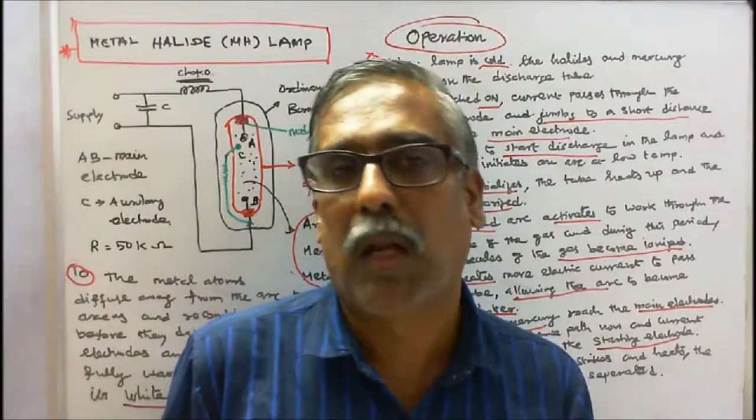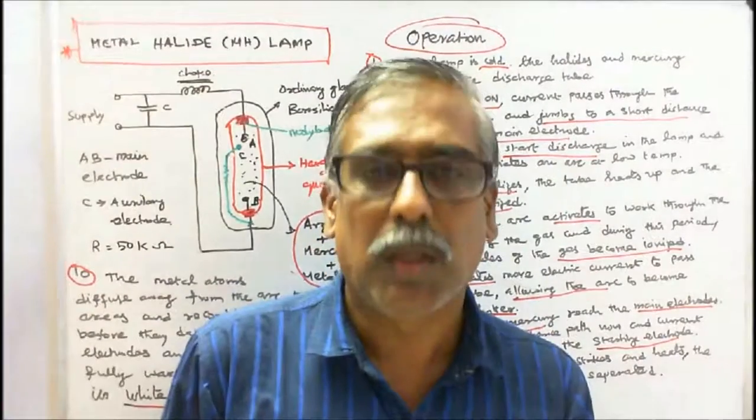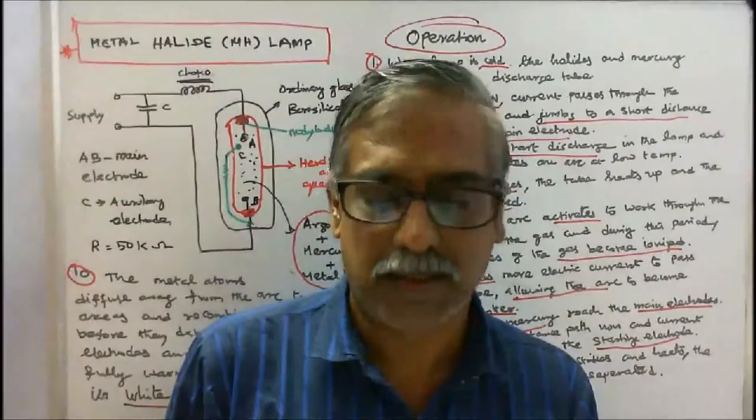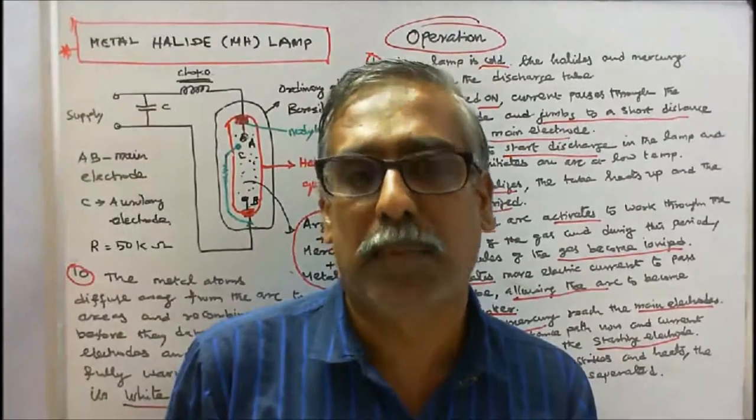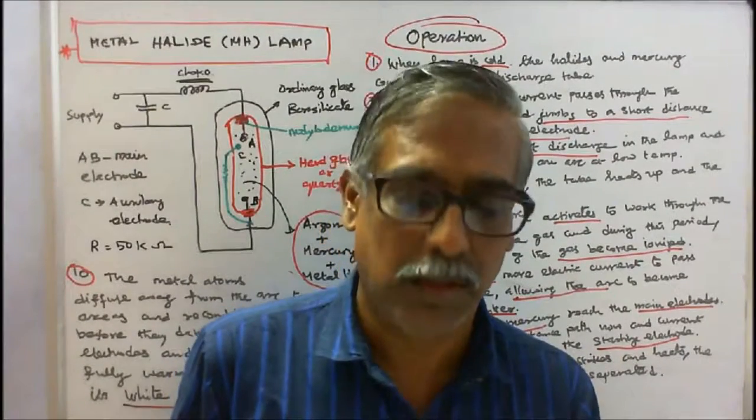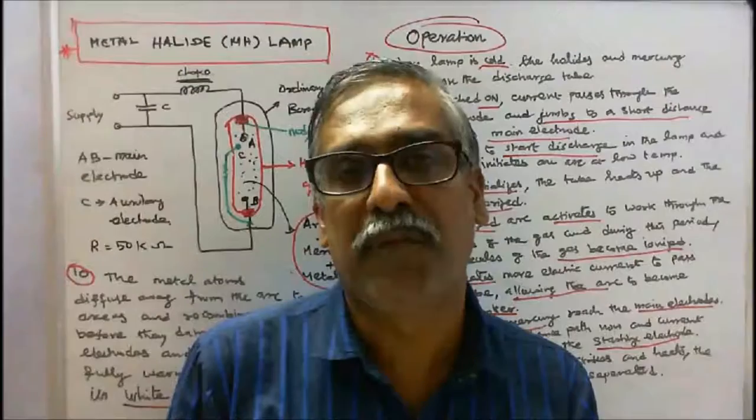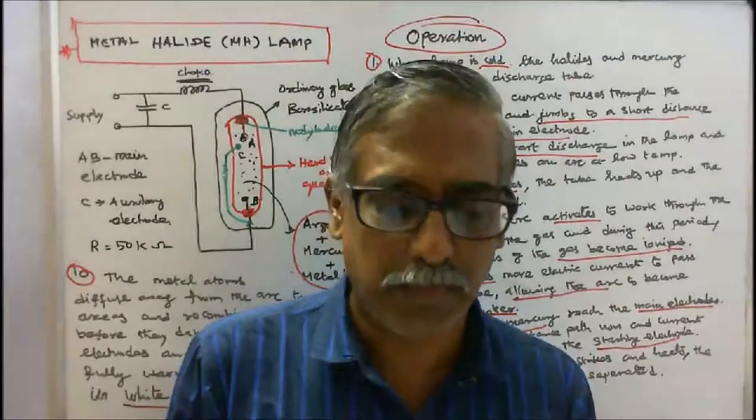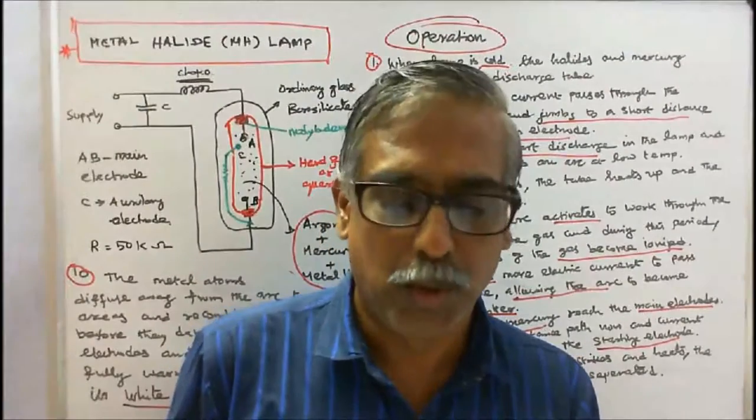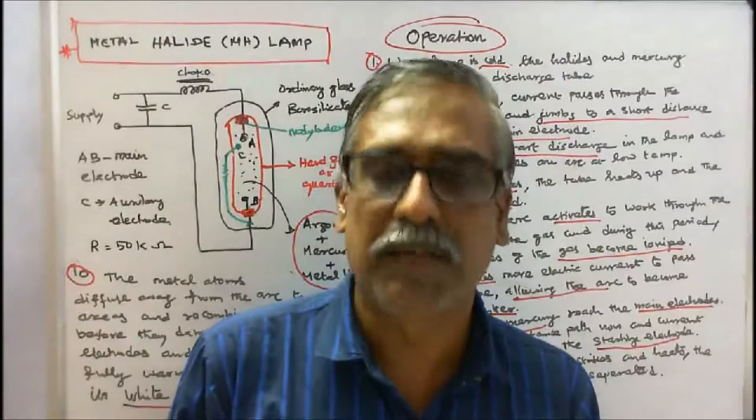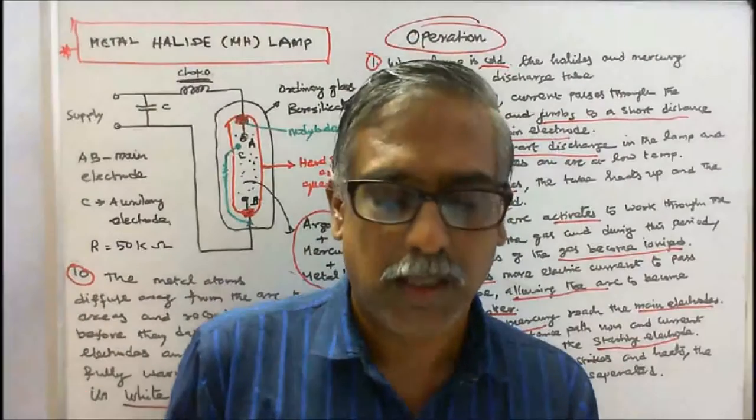Advantages of metal halide lamp: 1. More pure white light than the popular high pressure sodium vapor lamp. 2. More energy efficient than mercury vapor lamp. 3. Lumens per wattage range from 65 to 115.